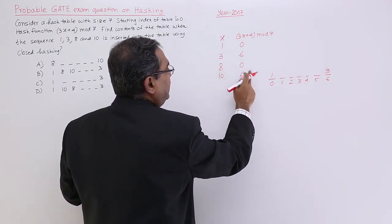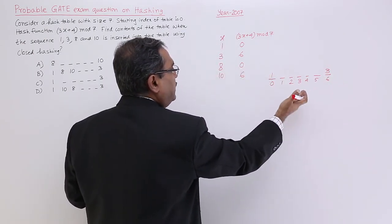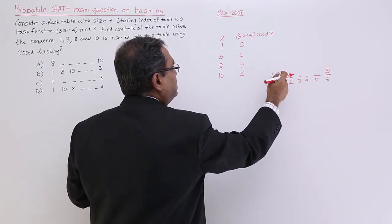8 will be going to the 0th address. Occupied. Linear probing collision resolution, linear probing, next free space.